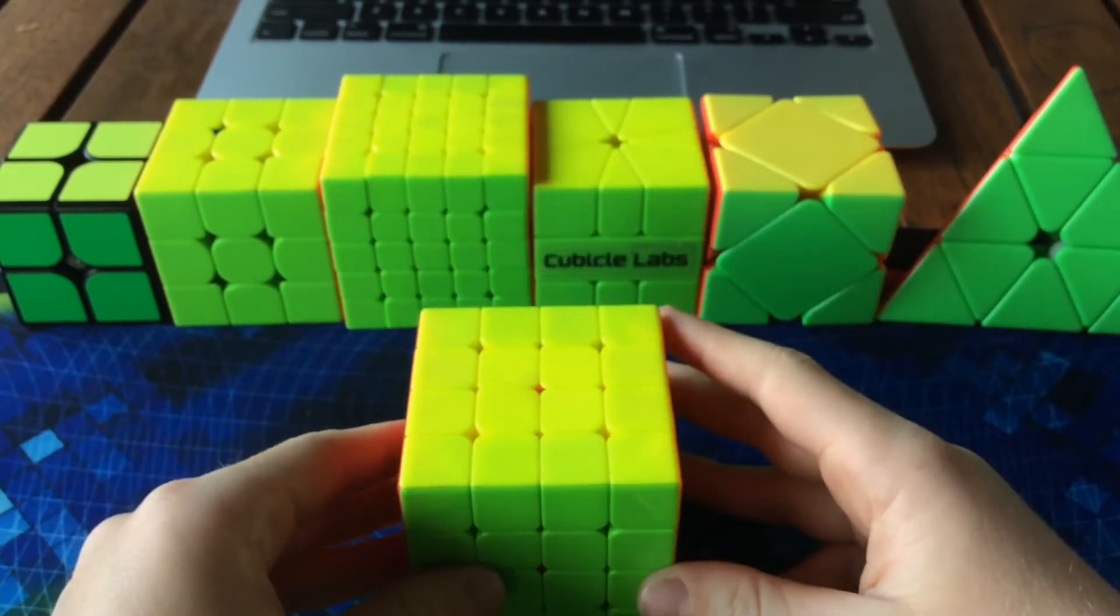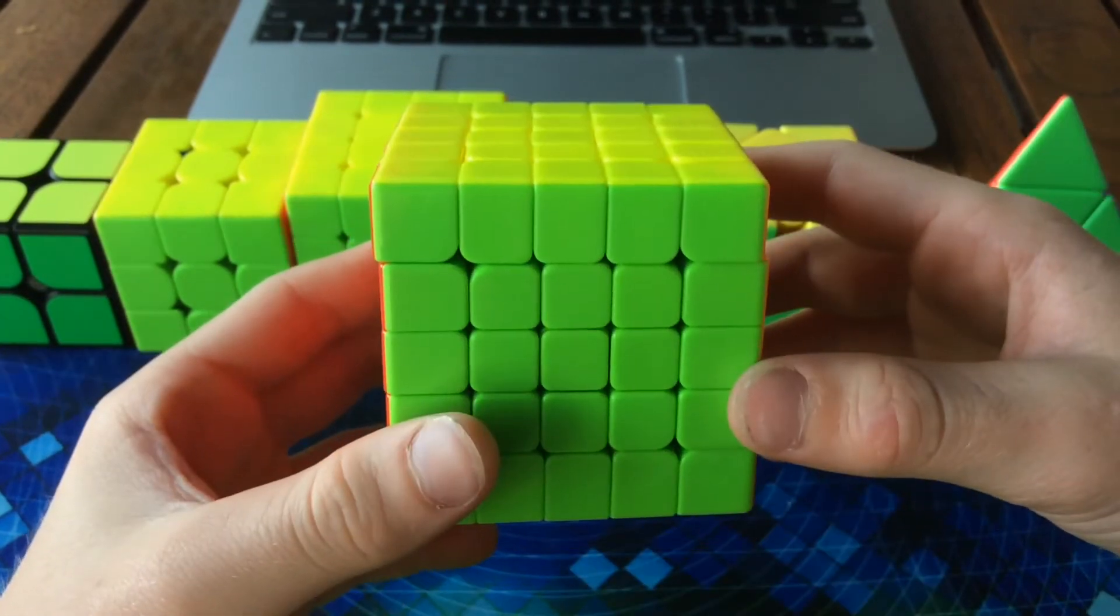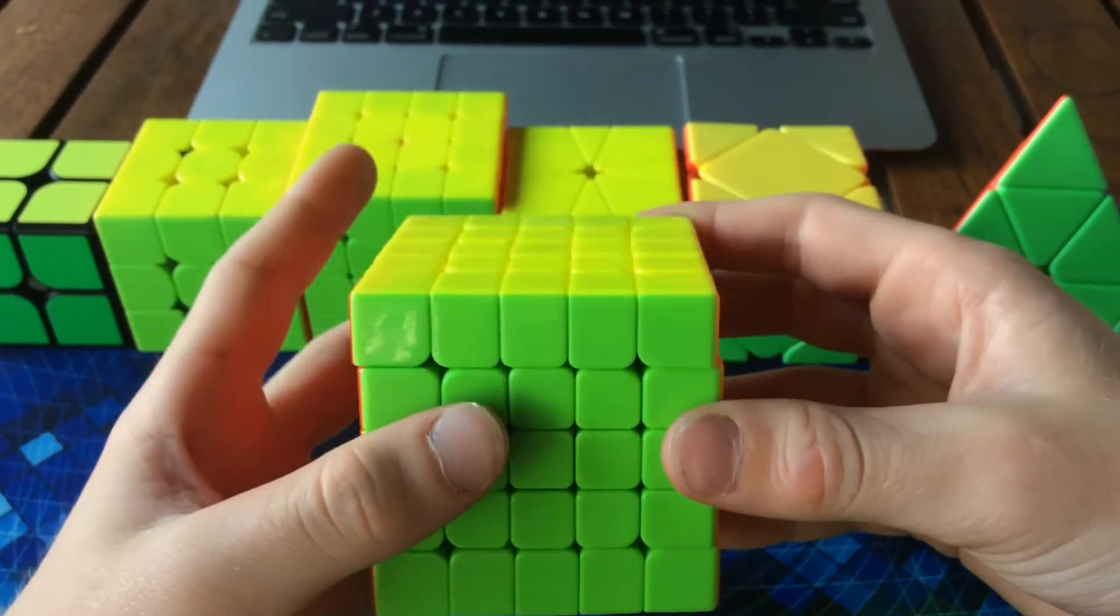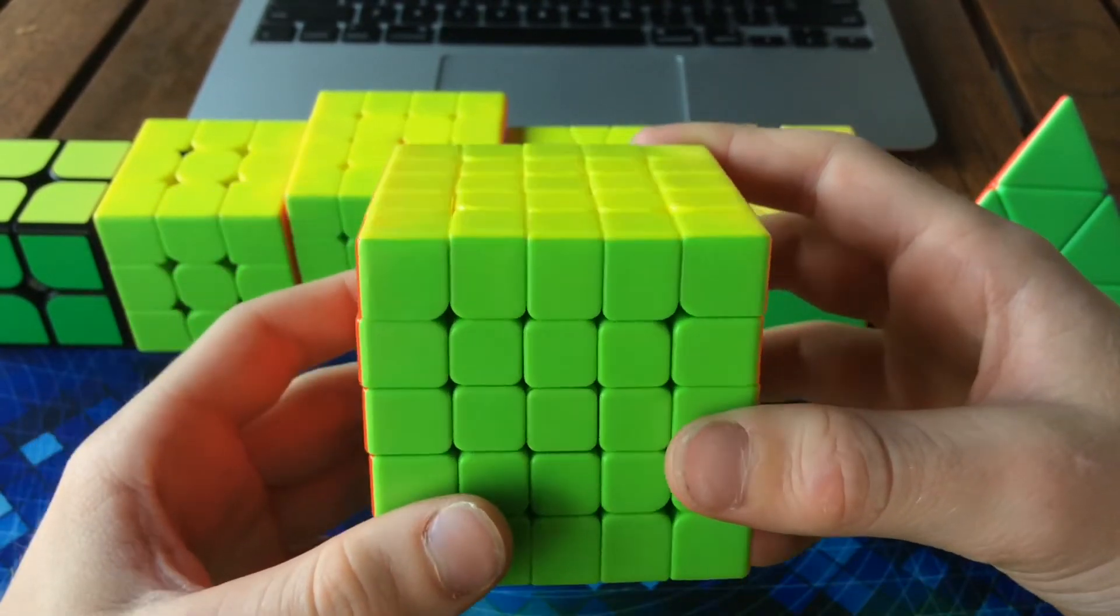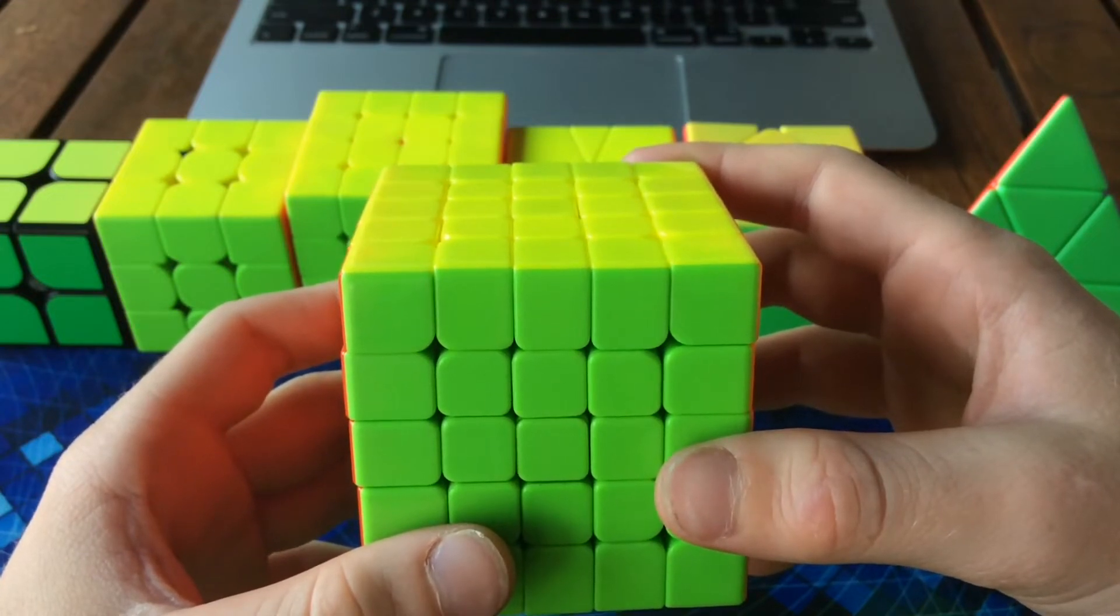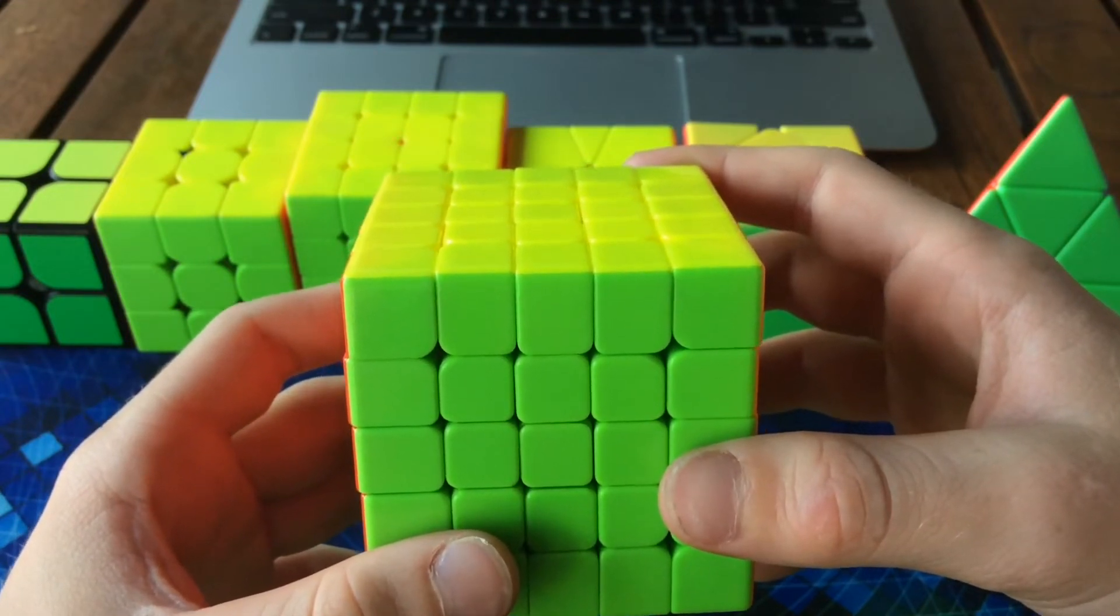Moving on to five by five, I'm using the Cubicle Labs Wushuang M. This cube is really good, except I still suck at five by five. I average around three minutes and the cutoff is two minutes, so there's really no point in me competing.